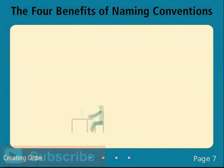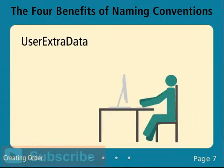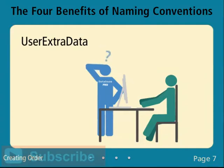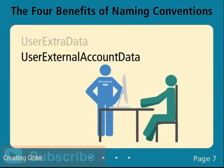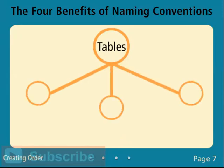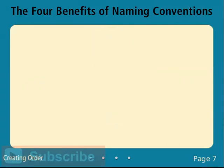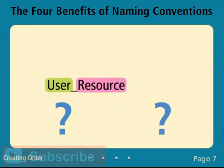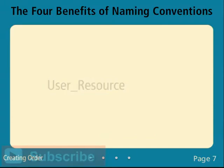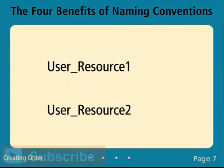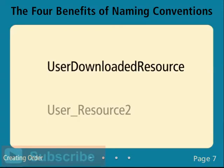Creating Order: A table named 'User Extra Data' may make sense to you at the time, but there is little chance your team members will be able to determine exactly what 'extra data' represents. In this case, naming the table 'User External Account Data' clarifies the table and contributes to a shared meaning. The name itself describes the purpose of the table, and everyone on the team will immediately understand it. Tables created to join many-to-many relationships are also an area where accurate naming is important. A better way to create order is to include the intent in the name — naming the table 'User Downloaded Resource' instead of 'User_Resource1' makes it more apparent that the table is logging the resources that users are downloading.